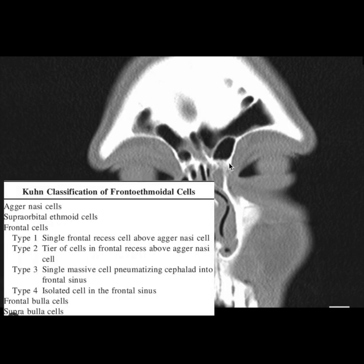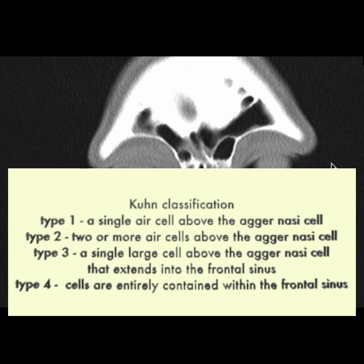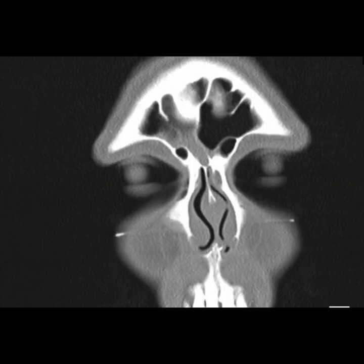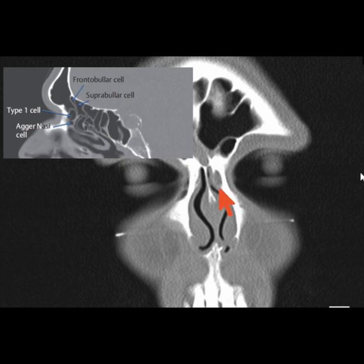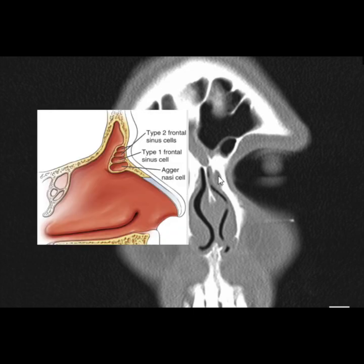The frontal cells are classified as per Kuhn's classification — take a screenshot and keep that as your wallpaper, remember it. Type 1 is a single cell present above the agger nasi — so if there was a cell just over here, that would have been a type 1 cell. If there would have been multiple cells just above the agger nasi, that would have been type 2.